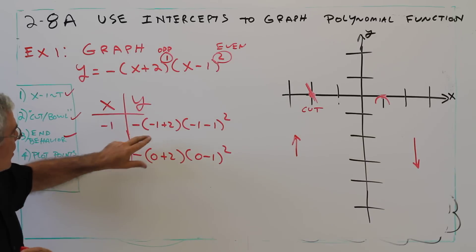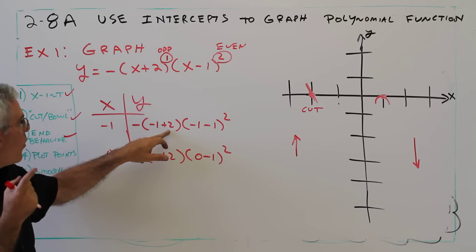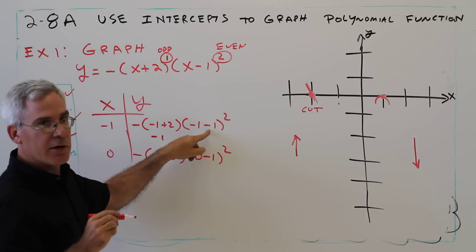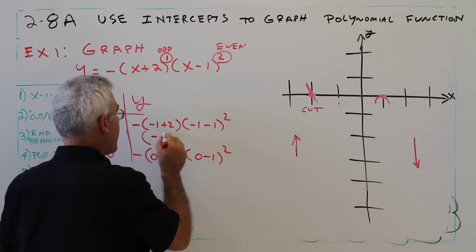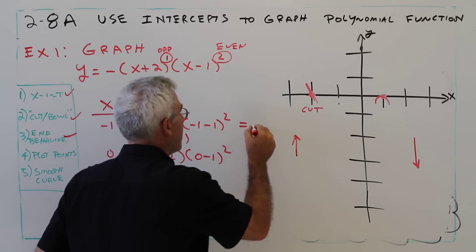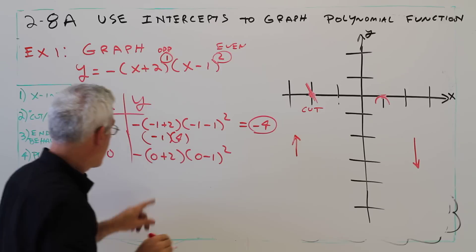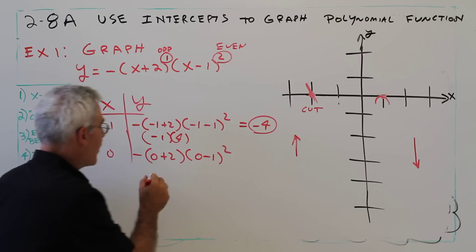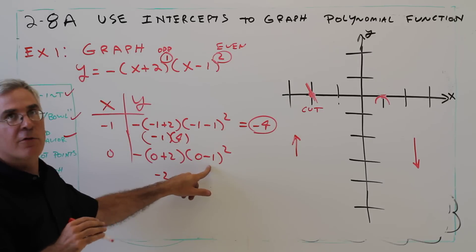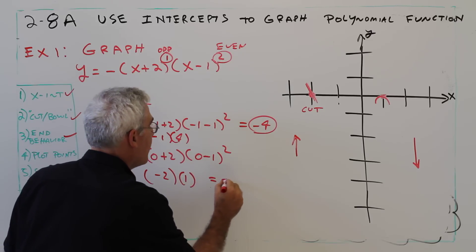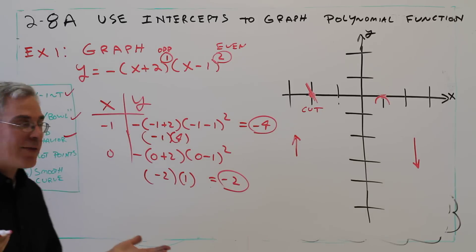Negative 1 and 2 is 1, the opposite, negative 1. Negative 1 minus 1 is negative 2. Negative 2 squared is 4. So that's going to be a negative 4. Over here, 0 and 2 is 2, the opposite of that is negative 2. 0 minus 1 is negative 1 squared is 1. That's going to be a negative 2. So I've got two additional points.